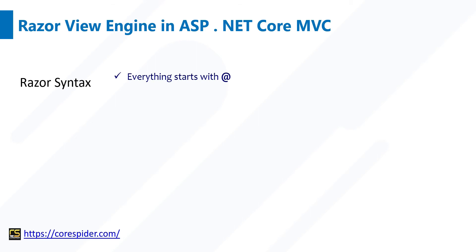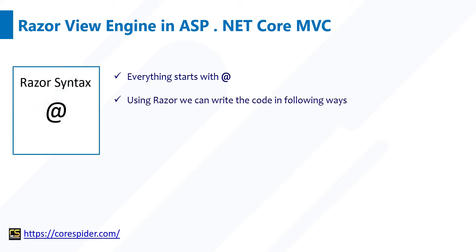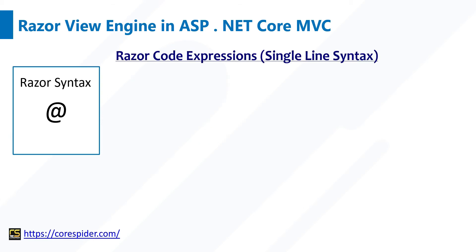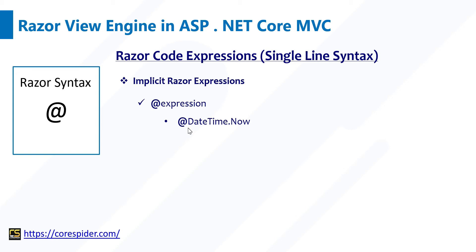Let's discuss what is Razor Syntax. The Razor syntax starts with the @ symbol. Using Razor we can write code in two ways. One is Razor Code Expressions or single-line syntax, and another is Razor Code Blocks or multi-line syntax. For single-line syntax, the implicit Razor expression means you type @ followed by your expression, such as @DateTime.Now, or any C# variable — that is called an implicit Razor expression.